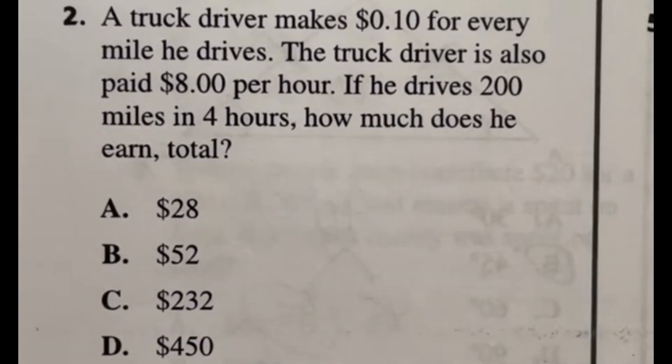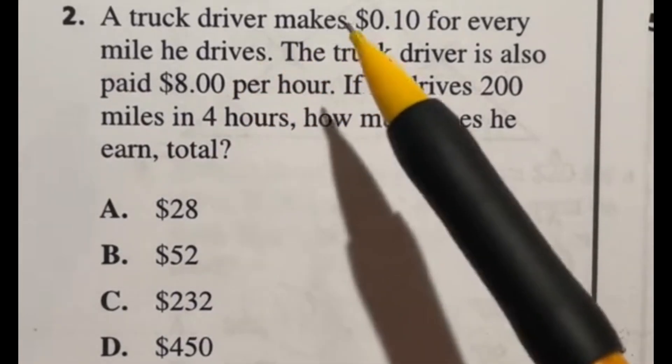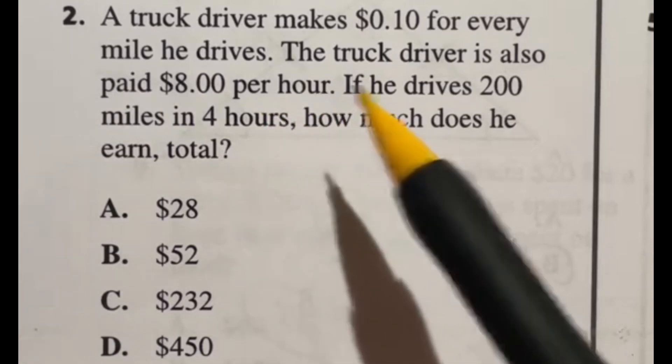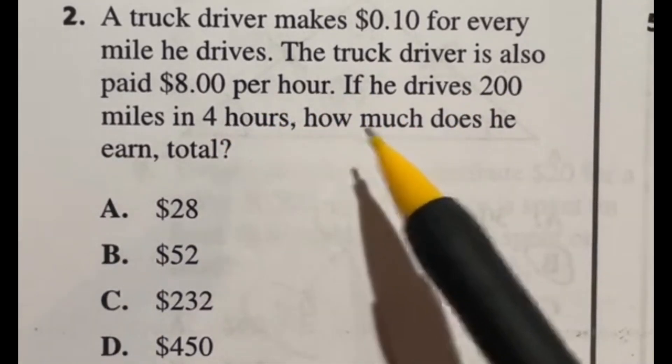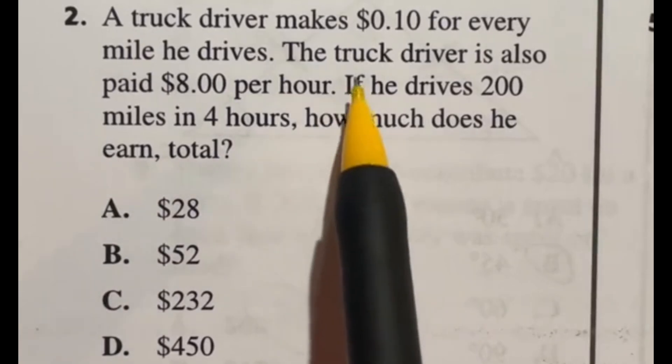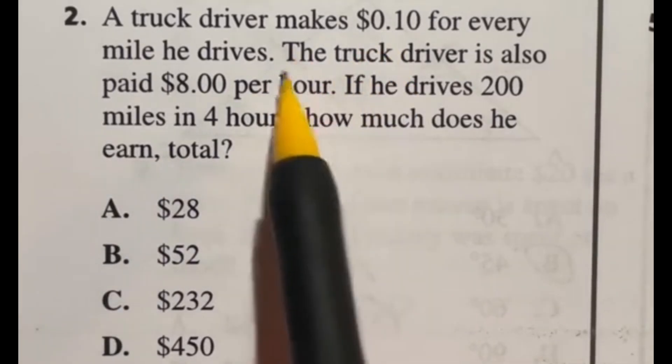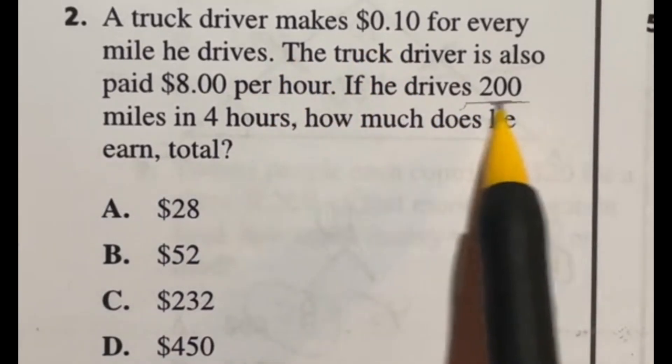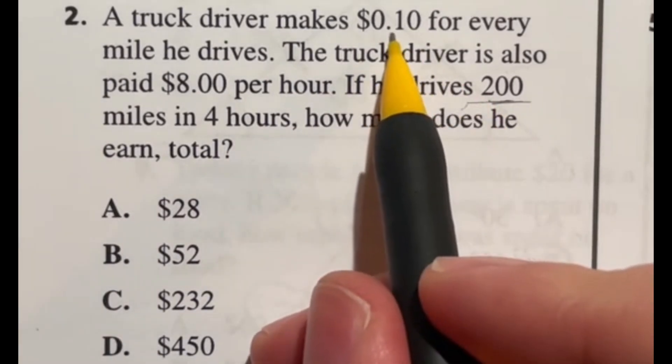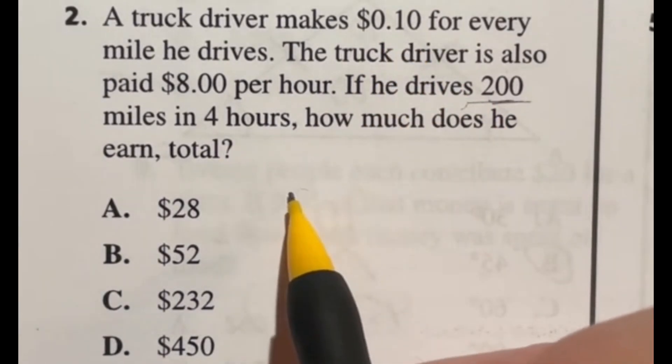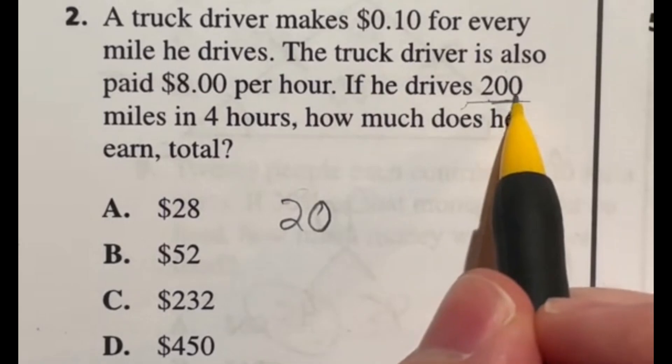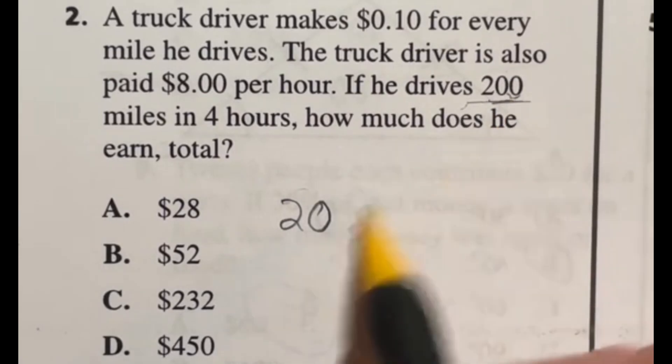In number two of the ASVAB for arithmetic reasoning, it says here that a truck driver makes 10 cents for every mile he drives. The truck driver is also paid $8 per hour. If he drives 200 miles in four hours, how much does he earn in total? So there's actually two pieces here because you know that he's making 10 cents for every mile he drives and he drives 200 miles. So first off, let's knock that out. If I do 200 times that 0.10, that's going to tell me that he makes a total of $20 by just moving the decimal place over the same way you would there. And that's going to be a total of $20.